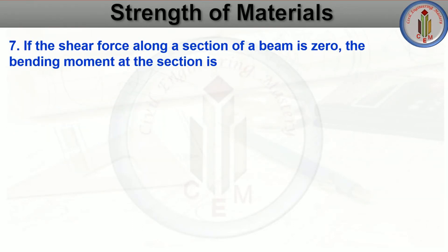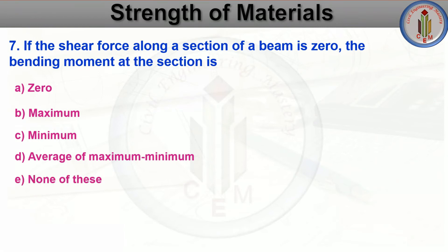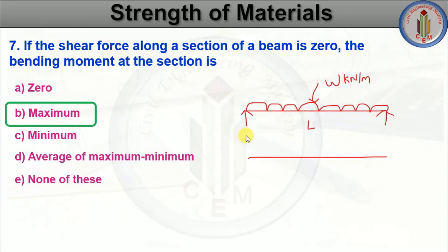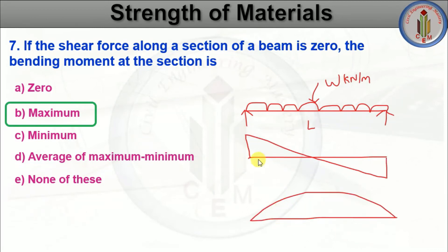If the shear force along a section of a beam is zero, the bending moment at that section is — zero, maximum, minimum, or average of maximum and minimum. The answer is maximum. Consider a simply supported beam: in the shear force diagram, where the shear force is zero, the bending moment is maximum. Similarly, at the point where the bending moment is zero, the shear force will be maximum.